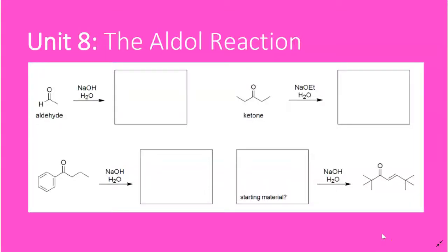Now that you understand the acidity of the alpha protons of aldehydes and ketones, and now that we've seen ways to make the enolate anion, we can do a very famous reaction called the aldol reaction. If you can master the aldol reaction, the rest of unit 8 becomes very easy because the other reactions in unit 8 are just variations on this very fundamental, very famous reaction.